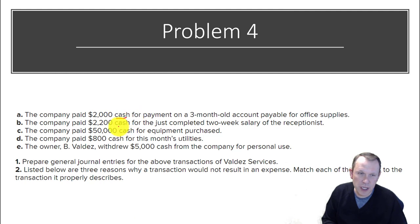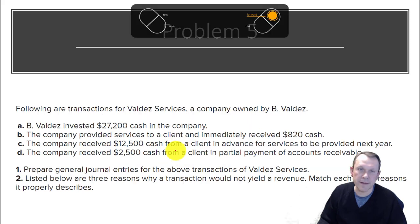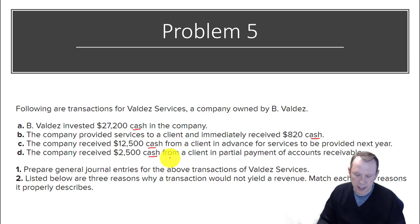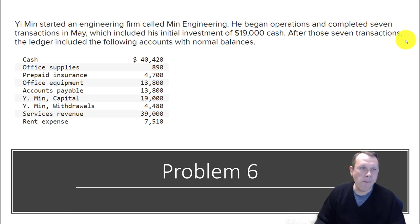Moving on to problem four: look at your cash entries — that will really help you with this one. Cash in is a debit, cash out is a credit, so get that first and it should be pretty easy. Problem five is similar — we're looking at cash again. All of those are going to be pretty straightforward since we're receiving cash in most cases.